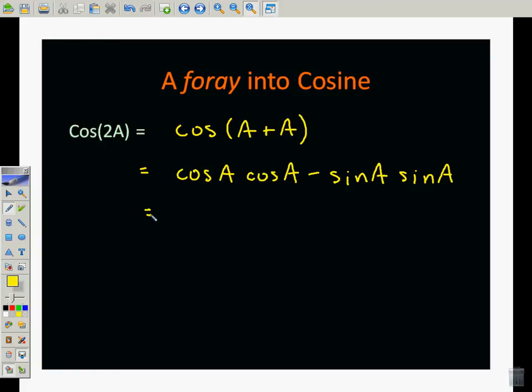And so we obviously see that this is cosine squared of A minus the sine squared of A. That's one way to write it. But we know that the cosine squared of A is equal to 1 minus the sine squared of A, so we could also write it like this.